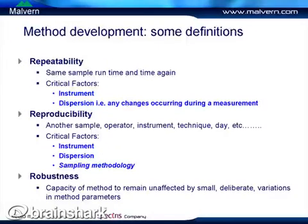Before going through the process of method development, we need to look at the parameters on which the guidance is based. First is repeatability of the measurement. This is determined from repeated measurements of the same sample — the same aliquot or subsample — measured a number of times, testing the instrument and the state of dispersion. From the repeatability test, we can see whether the sample is in a stable state of dispersion, whether it's agglomerating or dissolving, or changing with time in other ways.